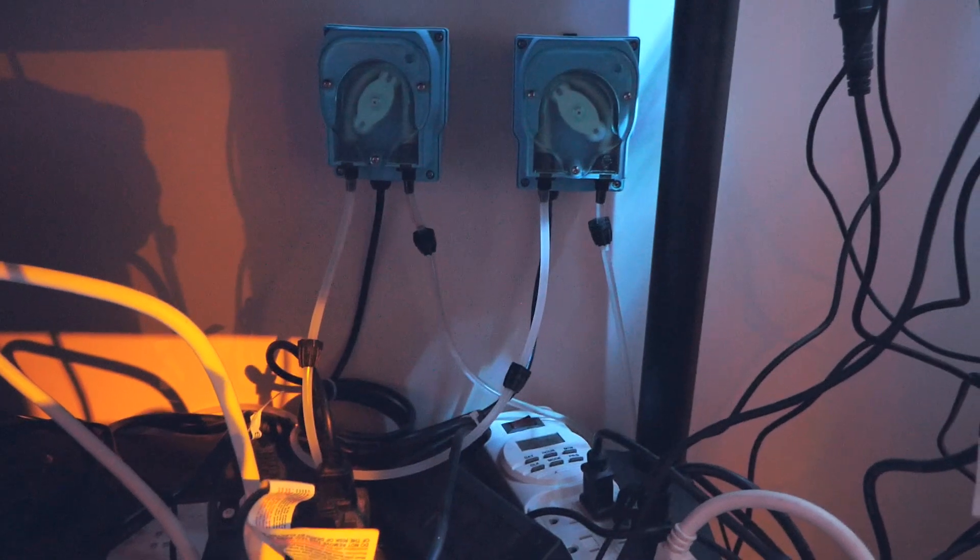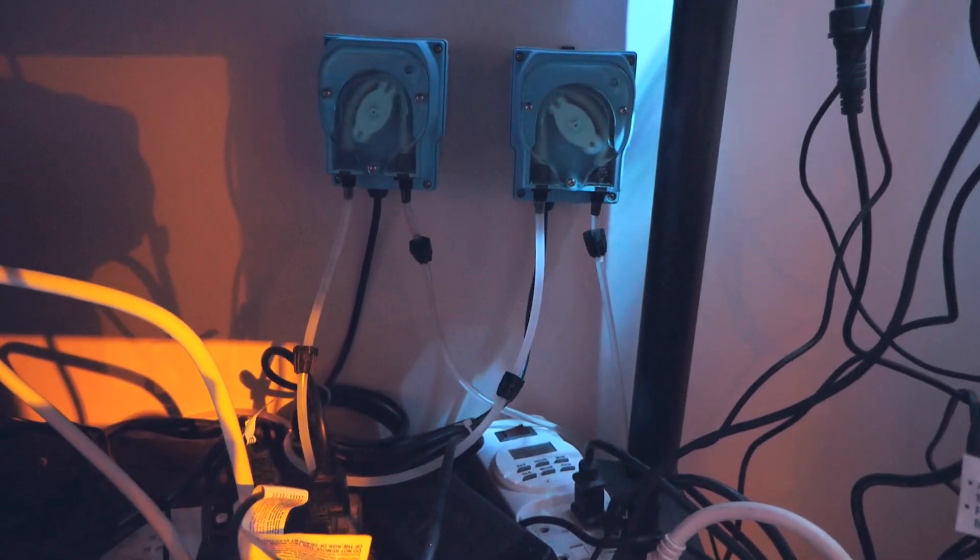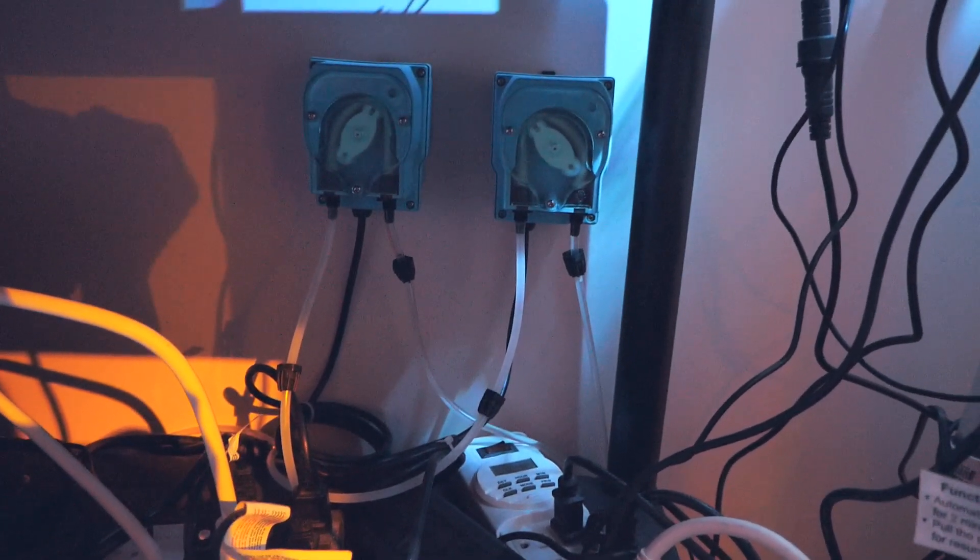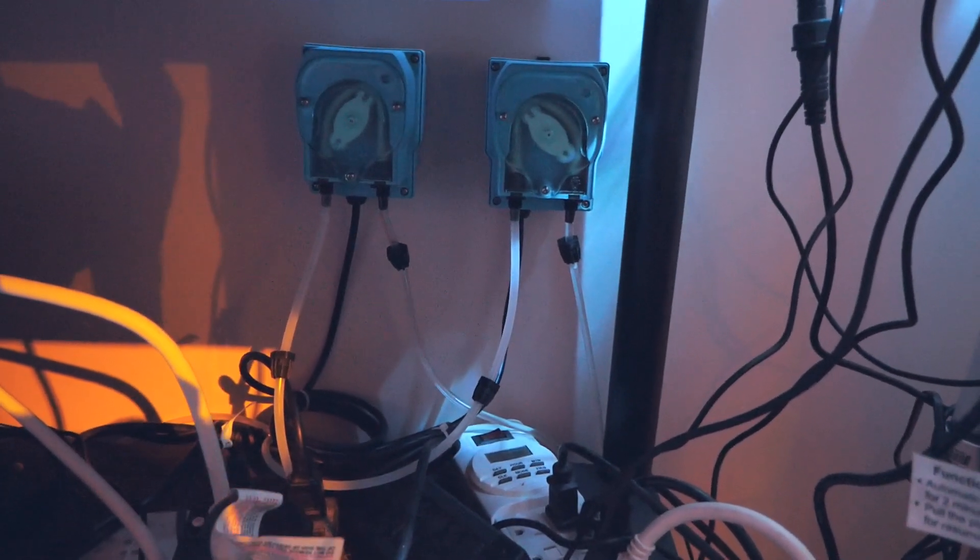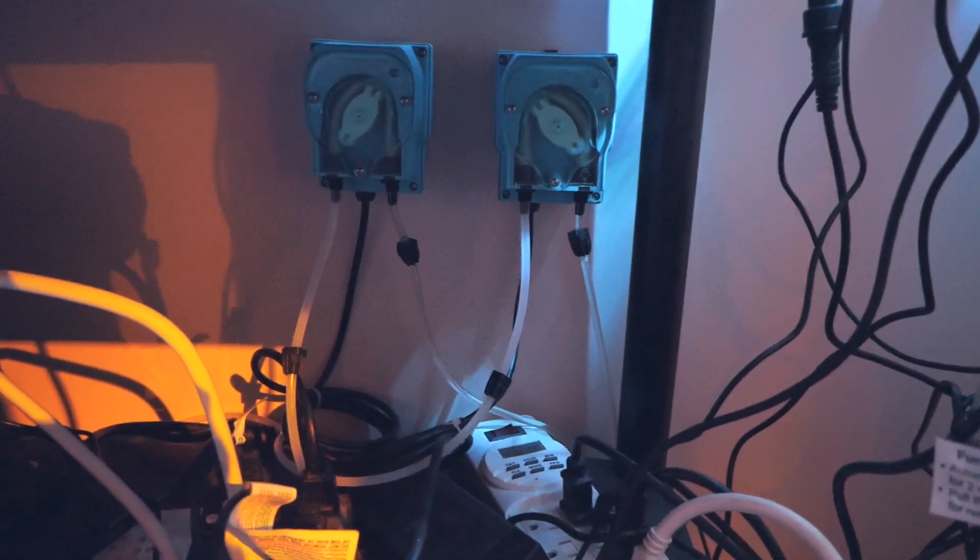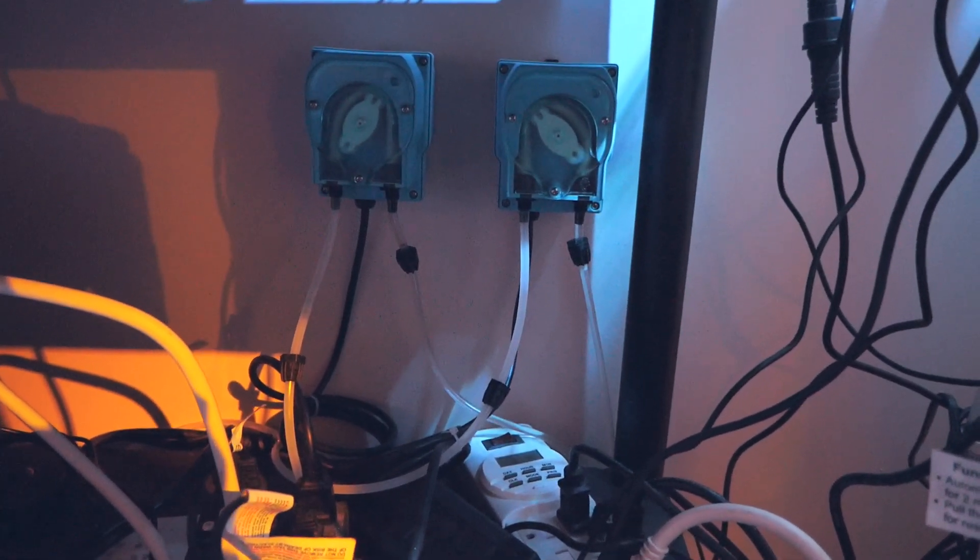So next, the Apex also controls these 1.1 ml per minute dosers. Now these are knockoffs of the BRS dosers, Canadian knockoffs that are from a local store up here. You can see that they are light blue instead of black.